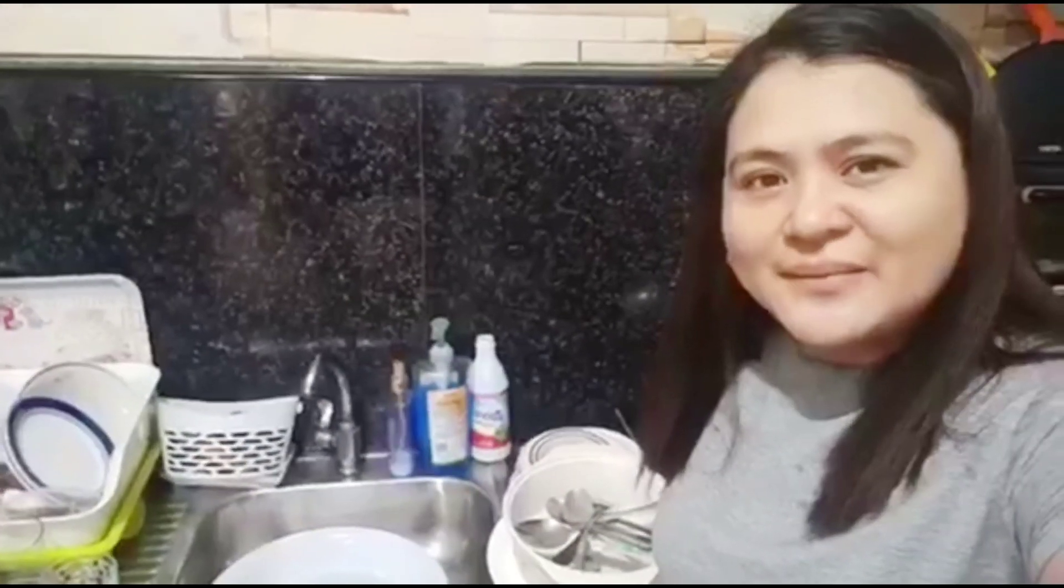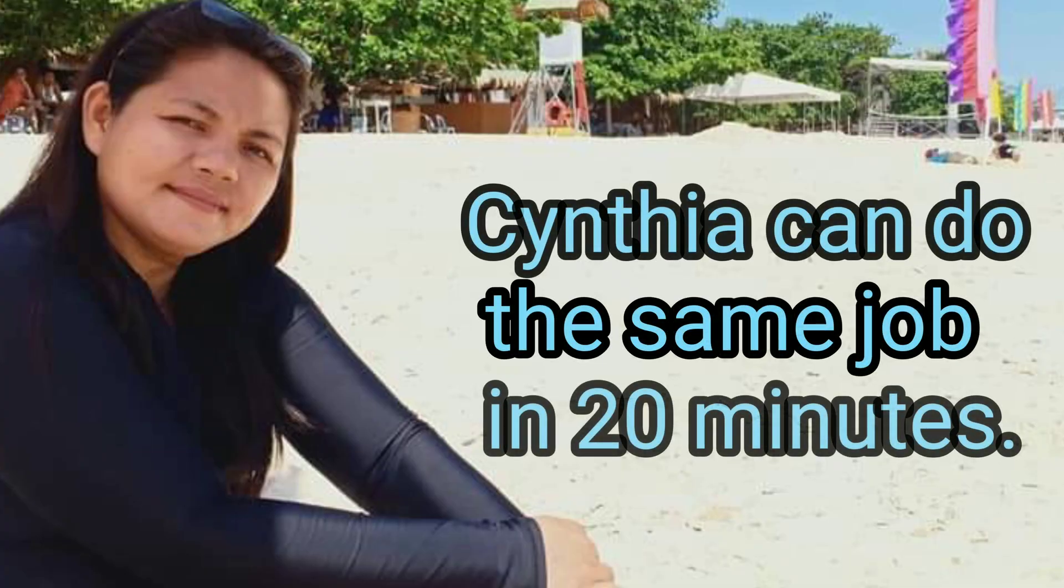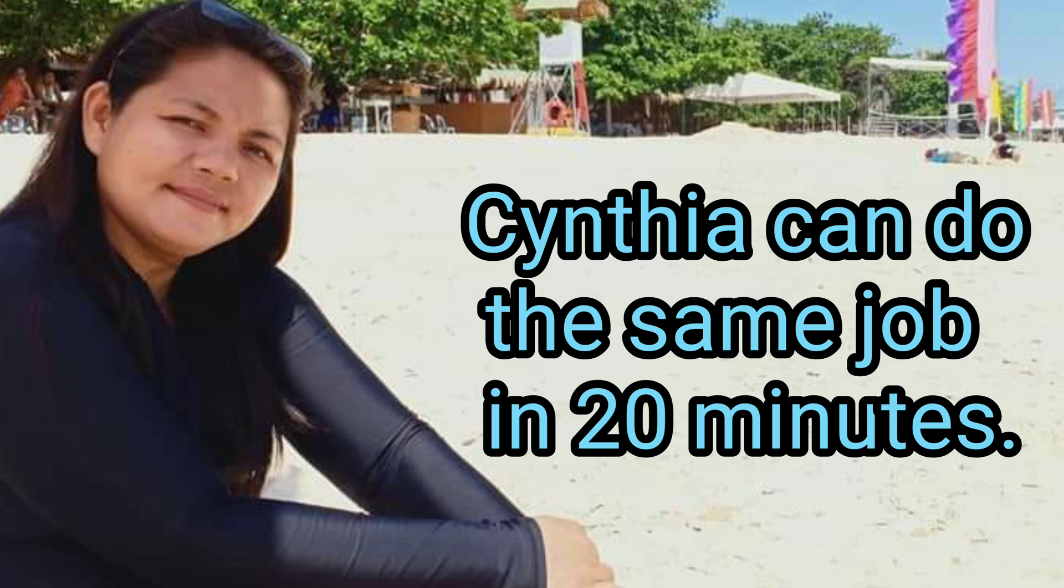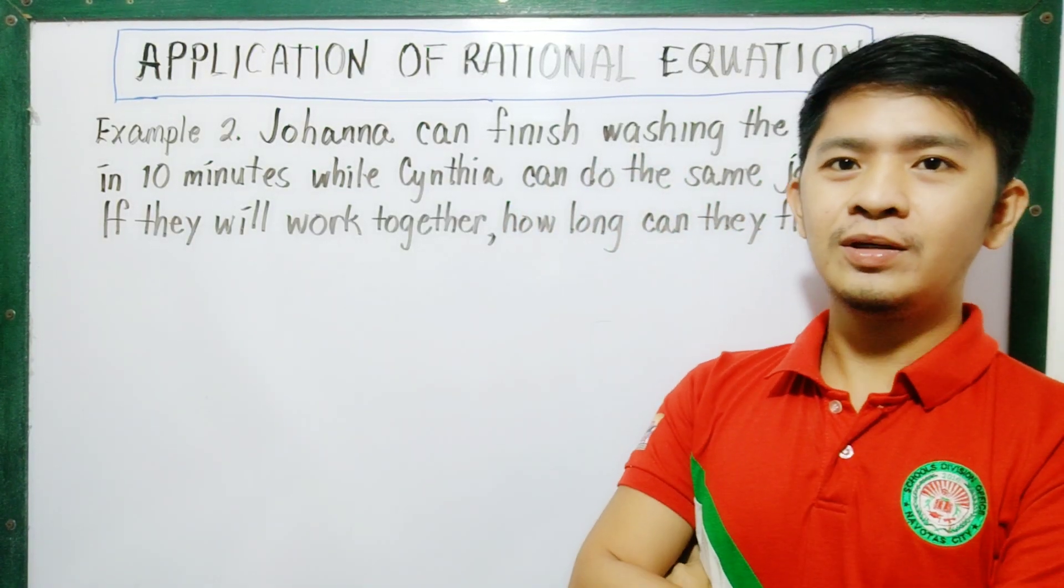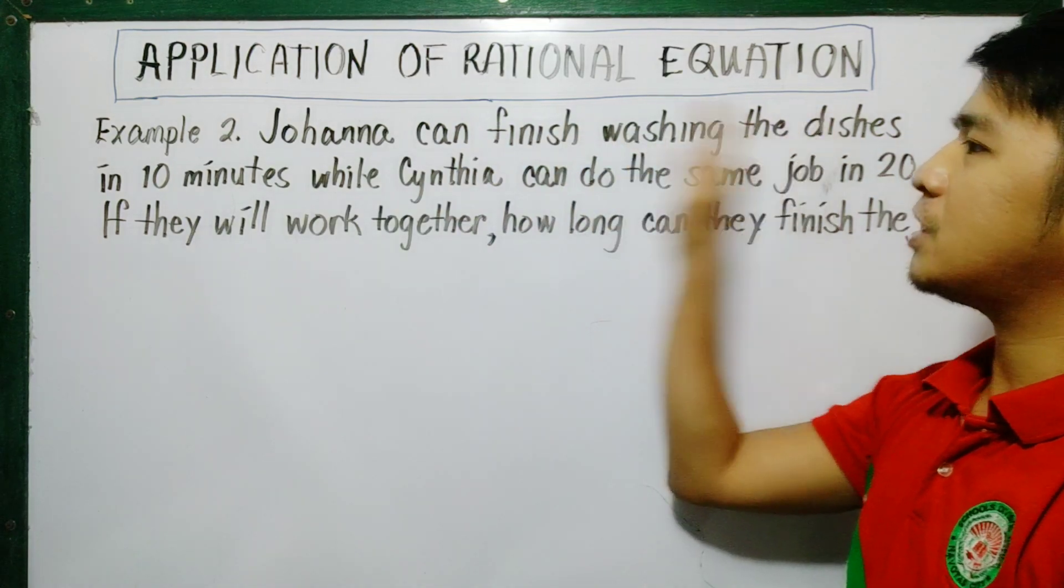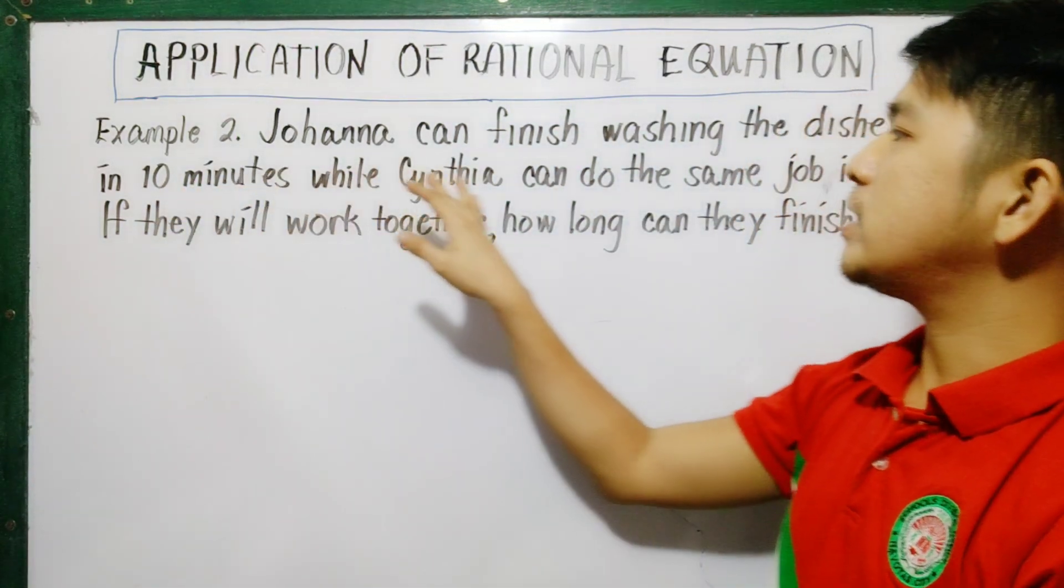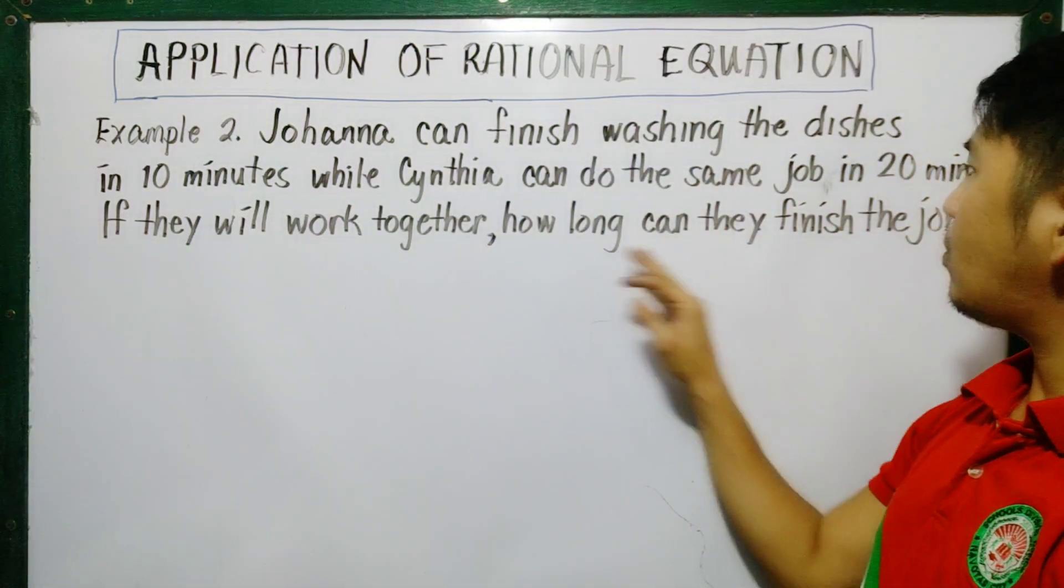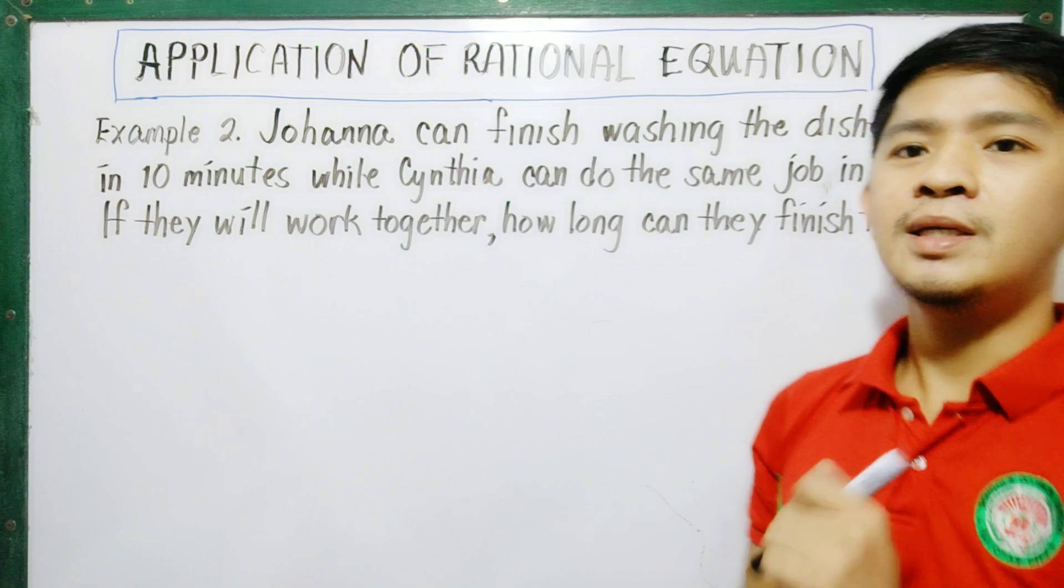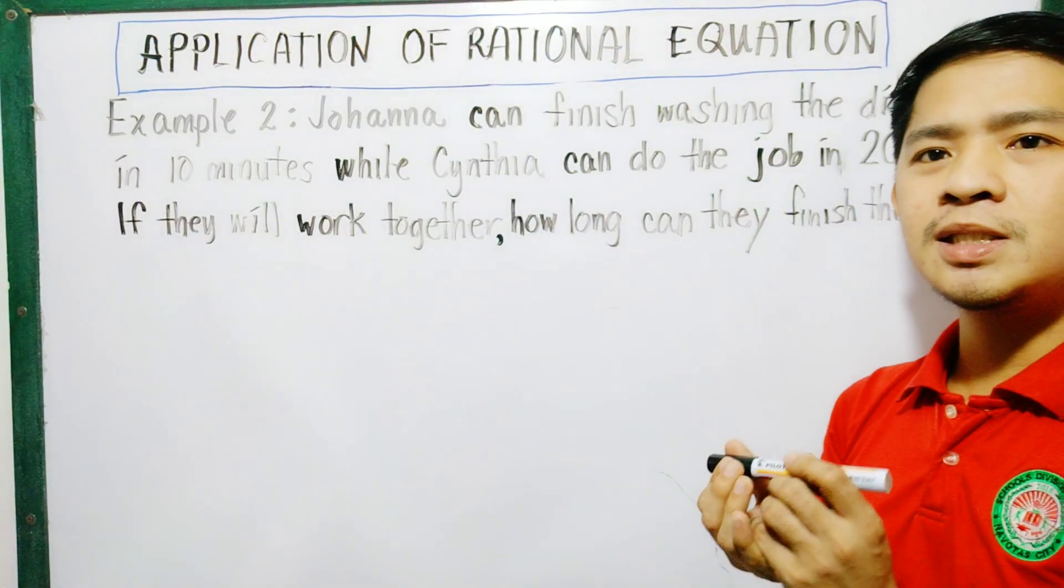I can wash the dishes in 10 minutes. Joanna is faster than me. I can finish the dishes in 20 minutes. So, as you can see, Joanna can finish washing the dishes in 10 minutes while Cynthia can do the same job in 20 minutes. If they will work together, how long can they finish the job? To solve this quickly, let us just use the formula.